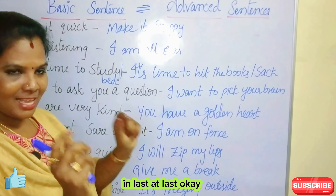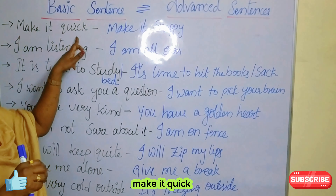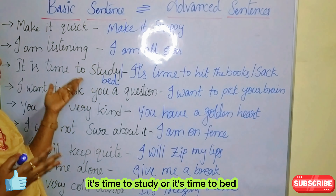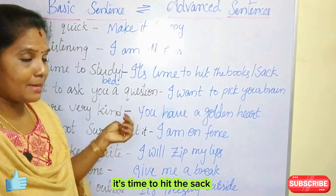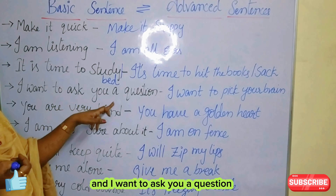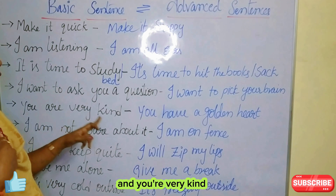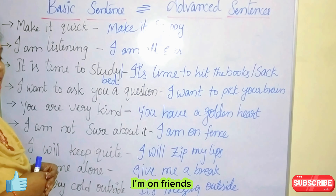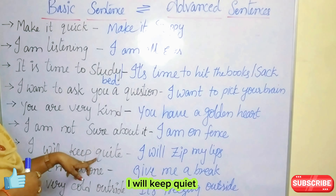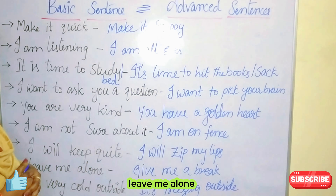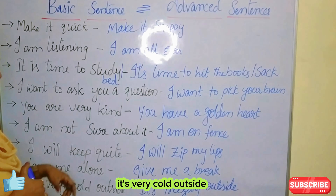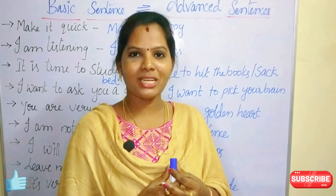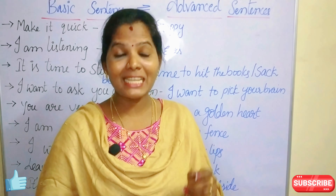So these are the few sentences we discussed today. Let us recap. Make it quick — Make it snappy. I am listening — I am all ears. It is time to study — It is time to hit the books. It is time to sleep — It is time to hit the sack. I want to ask you a question — I want to pick your brain. You are very kind — You have a golden heart. I am not sure about it — I am on the fence. I will keep quiet — I will zip my lips. Leave me alone — Give me a break. It is very cold outside — It is freezing outside.